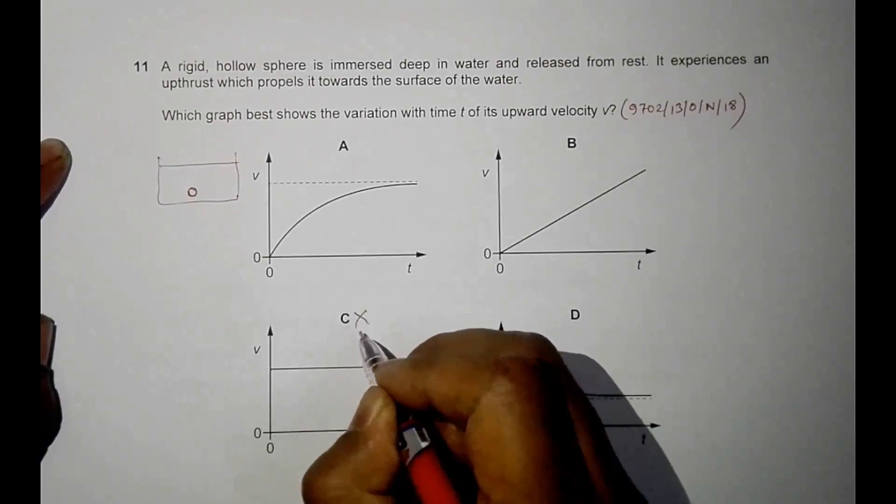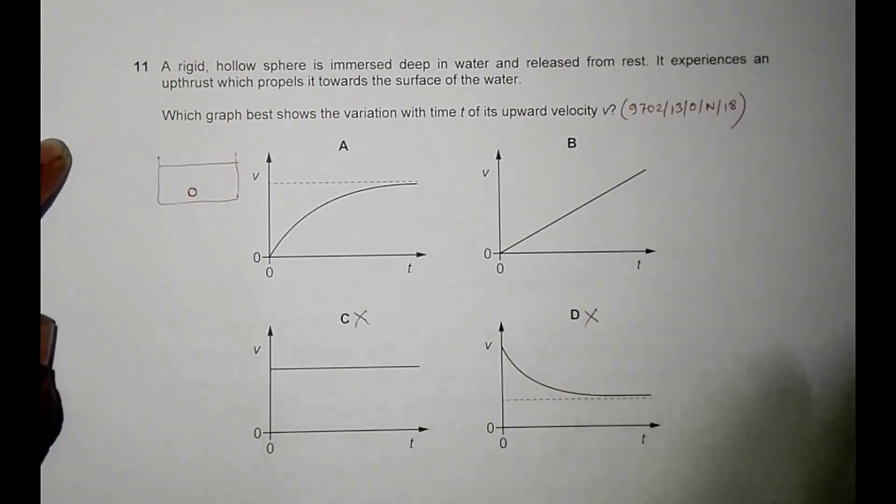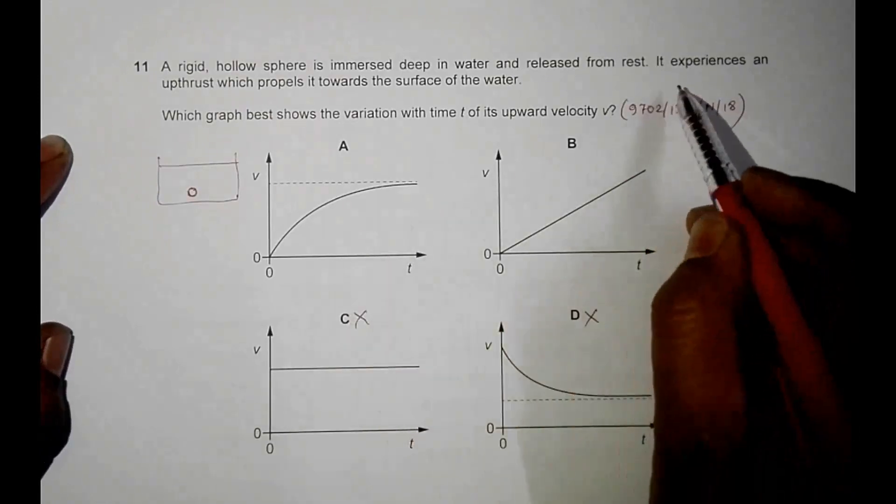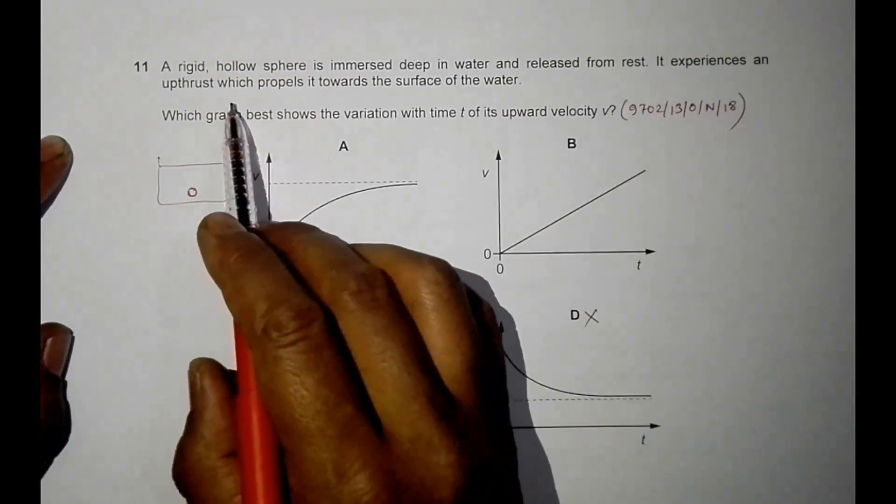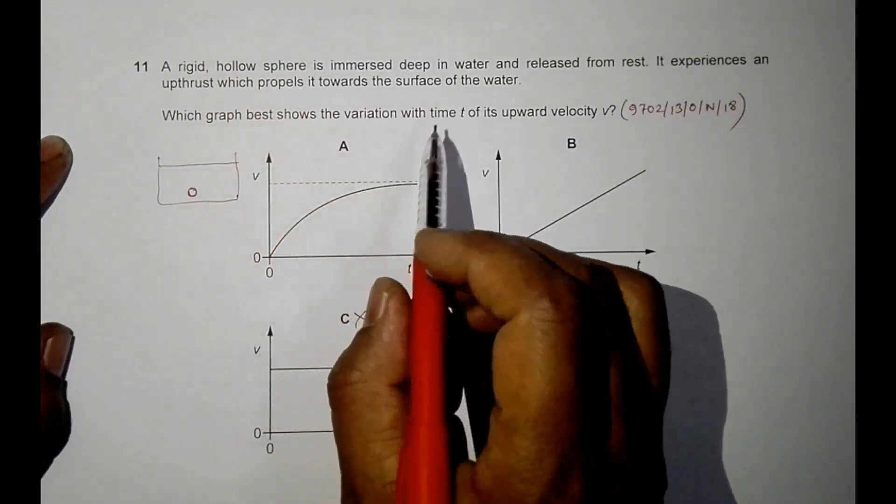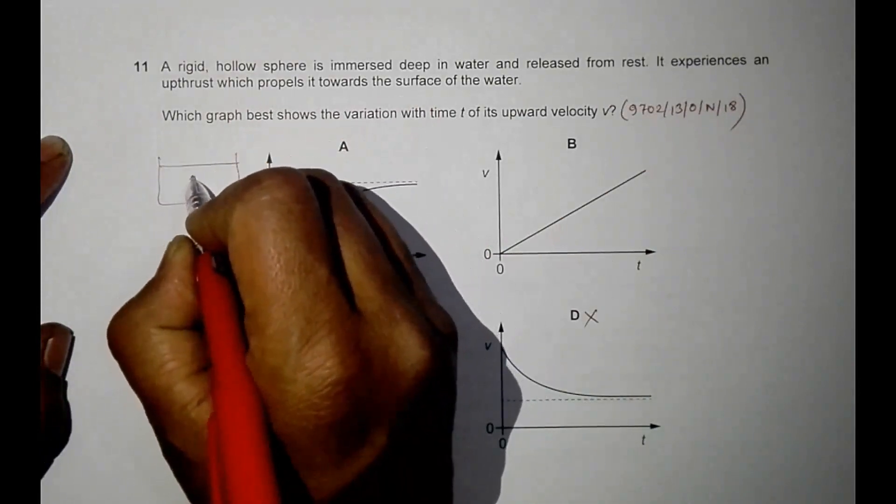In the very beginning we can disqualify these two of them because they say that initially the body had some velocity. It experiences an upthrust which propels it towards the surface of water, resulting in upward movement like this.